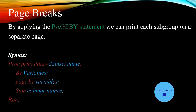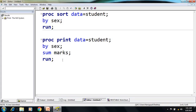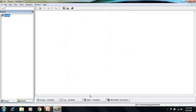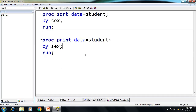Next is page breaks. By applying the PAGE BY statement we can print each subgroup on a separate page. The syntax is: PROC PRINT DATA=dataset-name; BY variable; PAGEBY variable; The PAGE BY always uses the same variable as the BY statement — they must be used together. For example, I want all sex=female records printed on one page and sex=male records on a different page.